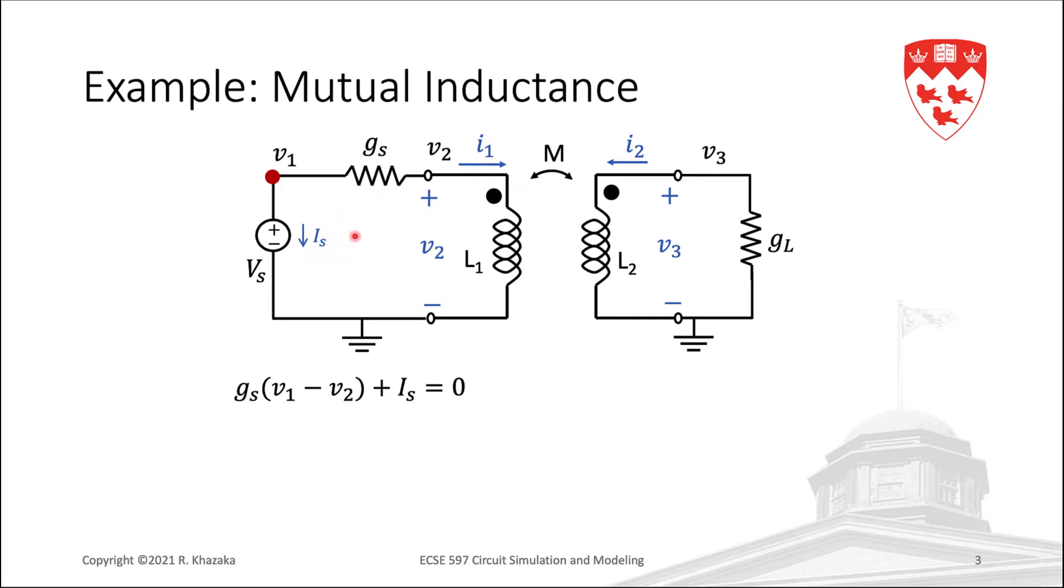Remember, in modified nodal analysis, we always need to add the current in a voltage source as a variable. Next, we write KCL at node 2. Here we have the current in GS as well, but going in the opposite direction. So, GS V2 minus V1, plus the current I1 going into inductor L1.